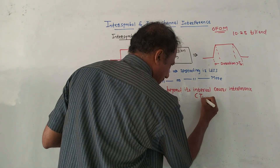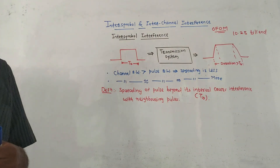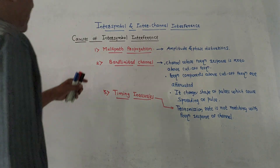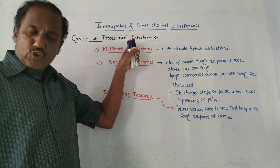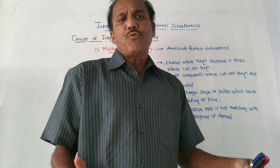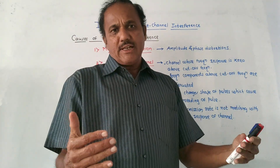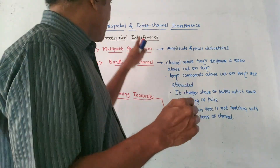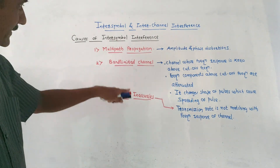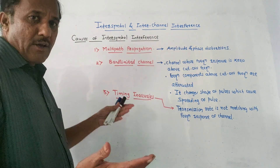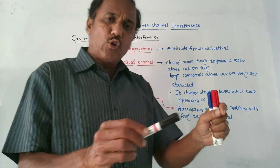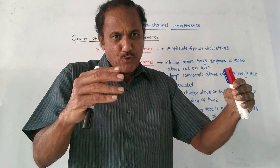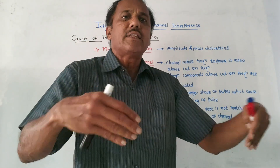So the definition of ISI is: spreading of a pulse beyond its bit interval Tb causes interference with the neighboring pulses, which is called Inter-Symbol Interference. From an exam point of view, we may expect questions like: 'What is inter-symbol interference?' and 'What are the causes of inter-symbol interference?' I have made a list of three important causes which produce inter-symbol interference.